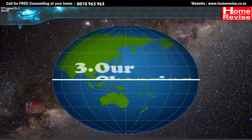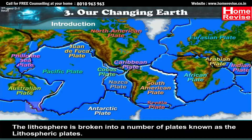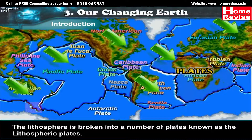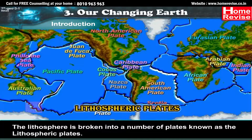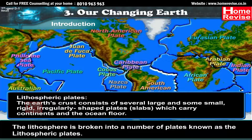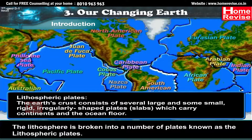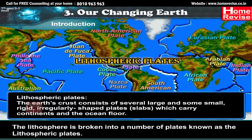Chapter 3: Our Changing Earth. The lithosphere is broken into a number of plates called lithospheric plates. The Earth's crust consists of several large and some small, rigid, irregularly shaped plates — also known as slabs — which carry continents and the ocean floor. These plates are called lithospheric plates.